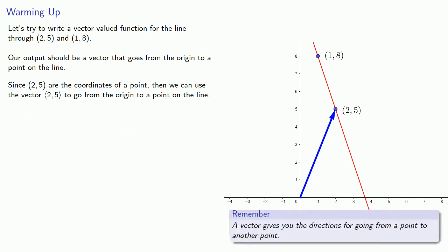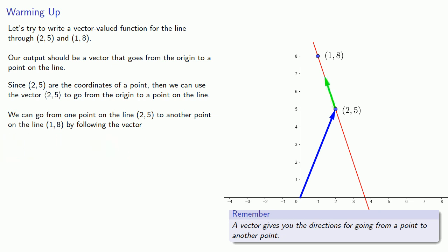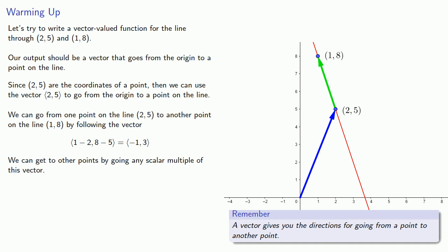Remember, a vector gives you the directions for going from one point to another point. So we can go from one point on the line, (2, 5), to another point on the line, (1, 8), by following a vector — giving us the vector (-1, 3). We can reach other points by going any scalar multiple of this vector, giving us the vector equation: the vector (2, 5) plus a scalar multiple of the vector (1, -3).